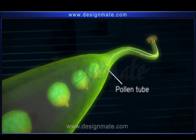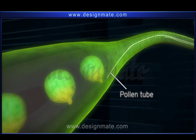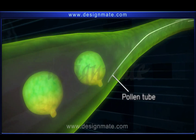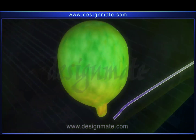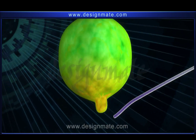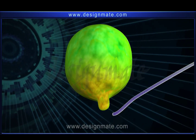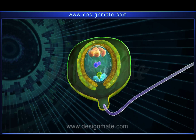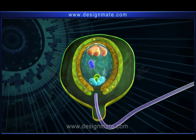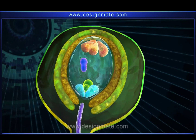One pollen tube grows right through the style and reaches the ovary, which contains structures that produce the female gamete. Through a narrow opening in the ovule called a micropyle, the pollen tube enters the ovule.